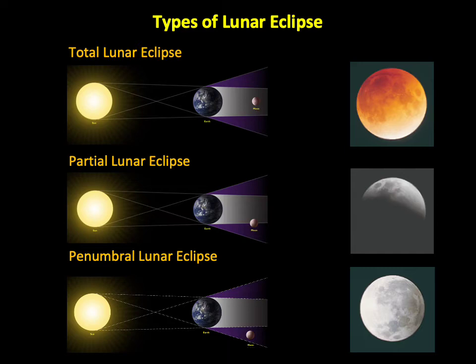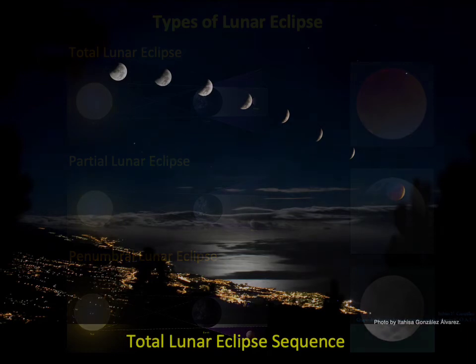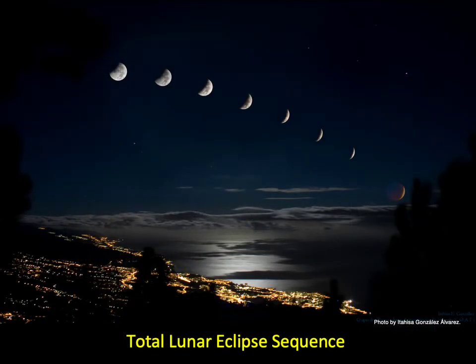Some lunar eclipses are only partial or penumbral, but total eclipses must also begin and end with partial stages. This series of photos shows Earth's shadow gradually covering more and more of the Moon during a total lunar eclipse.